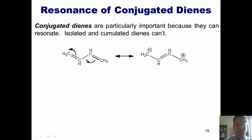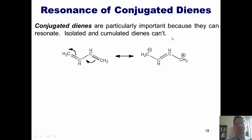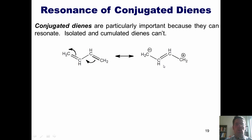Let me show you some examples. If I've got this conjugated diene, you can imagine the pi electrons pushing up onto this carbon giving it a negative charge, and these pi electrons thrusting up to close like a door on a hinge forming a carbon-carbon double bond, leaving me a positively charged carbon over here, forming this resonance contributor. I could go backwards as well. Thus, this is one example of how conjugated dienes do experience resonance.